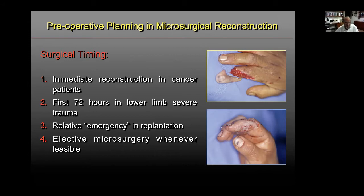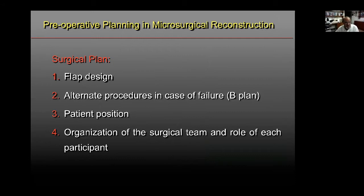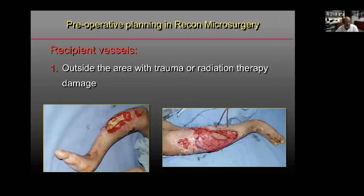For the surgical plan, four points are important: design the flap, always consider a backup plan in case of failure, determine the patient's position during surgery, and organize your surgical team by assigning a role to each participant. Regarding recipient vessels, it is better to select these outside areas affected by trauma or radiation therapy damage.